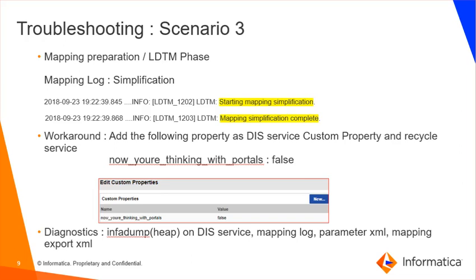The next crucial phase of LDTM is to simplify the mapping. If the mapping log shows this phase takes more time to finish, there is a DIS property to disable this phase. It is suggested to apply the property specified as a DIS custom property and rerun the mapping. The property is PortalsOptimization and the value should be set to false. If the issue still persists after applying this custom property, rerun the mapping and collect multiple Infinispan dump heap on the DIS service at regular intervals during the compilation phase until it completes. Along with this, send the mapping log, mapping export XML, and parameter XML for troubleshooting.